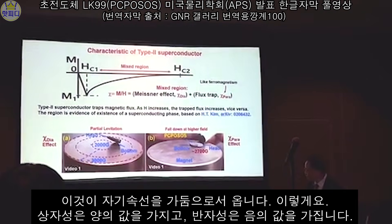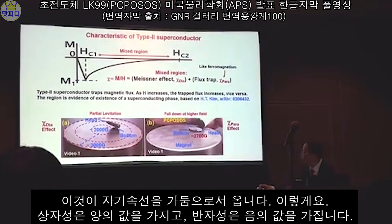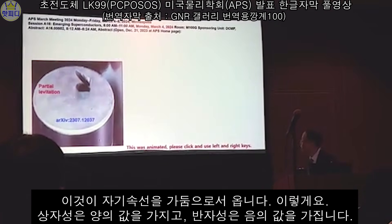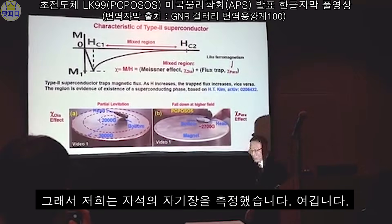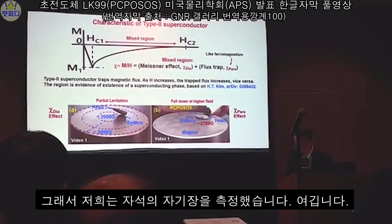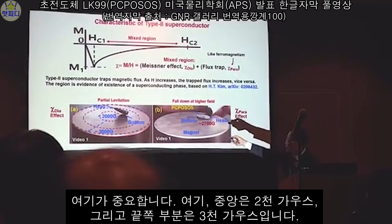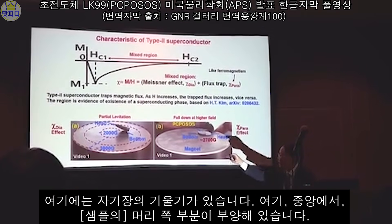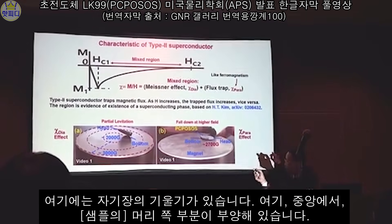Here is the magnetic field setup. The center is 2,000 gauss, the center is 3,000 gauss. There is a gradient of the magnet. The center of the head part — for example, the levitator — the bottom part is the magnetic intensity.